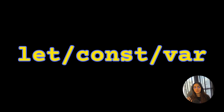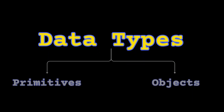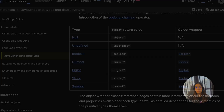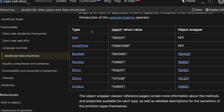We've talked about the different kinds of variables in JavaScript in the previous few videos in the series. In this video, I'm going to be talking about the data that these variables hold. JavaScript divides data types into two main categories: primitives and objects. There are seven primitive types in JavaScript: number, string, BigInt, boolean, undefined, null, and symbol.